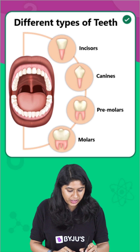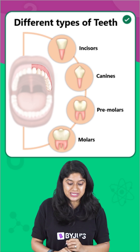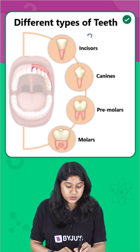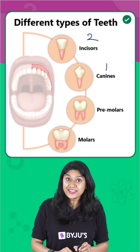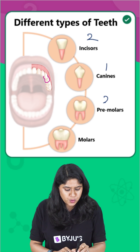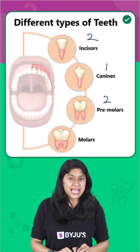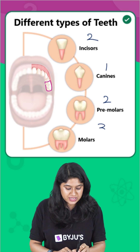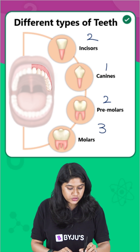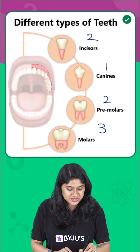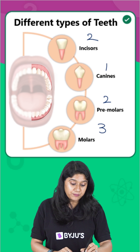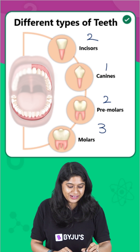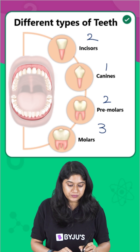In this particular way, we'll be looking at one side. We have two incisors, one canine, two premolars, and three molars. So these are the teeth present on this particular side, and the same will be there on the other sides as well.